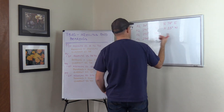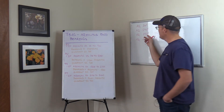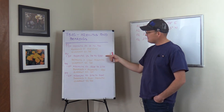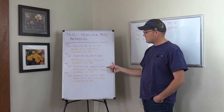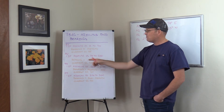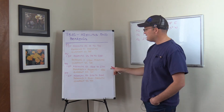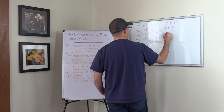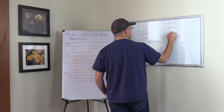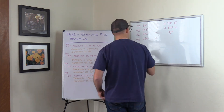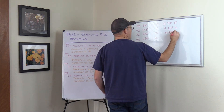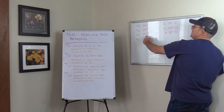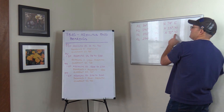Next, our azimuth is 252 degrees. It's bigger than 180 but less than 270, so we're between 180 and 270 — we use Rule 3 again. We take the azimuth minus 180: 252 minus 180 is 72 degrees, and our quadrant is southwest. So an azimuth of 252 degrees is a bearing of South 72 degrees West.